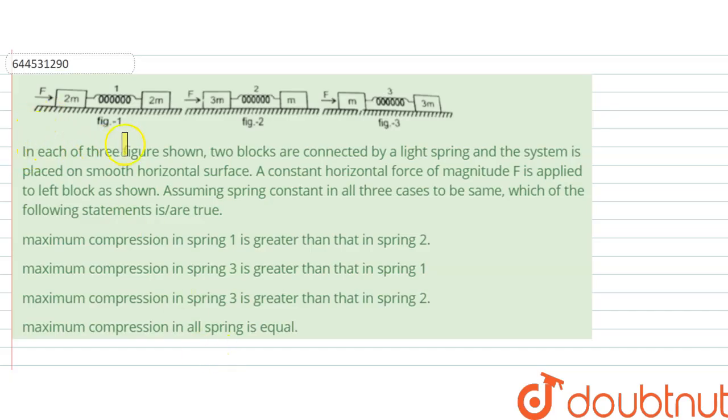The question says: in each of the three figures shown, two blocks are connected by a light spring and the system is placed on a smooth horizontal surface. A constant horizontal force of magnitude F is applied to the left block, and spring constant in all three cases is the same. So spring constants are k, k, k in all the three cases.